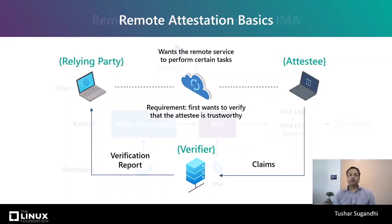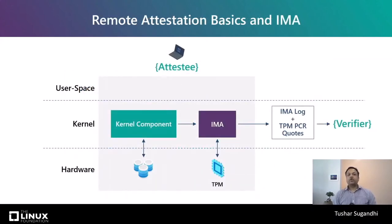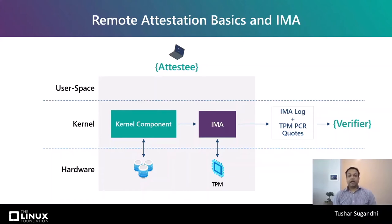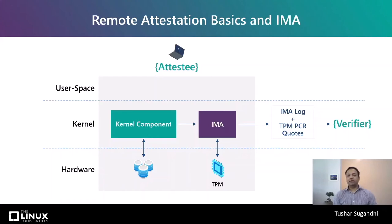Now let's zoom into the details of the attestee. We have IMA, which is part of the Linux kernel. It can take measurements from various kernel components like SELinux policy hash present in kernel memory, or the kernel boot command line parameters, and put that information in the IMA log and extend TPM PCR codes. The IMA log along with the TPM PCR codes and some other metadata is sent to the verifier. This information is sufficient for the verifier to confirm that the data indeed came from this TPM on this attestee system and the information present in the IMA log is not tampered with.